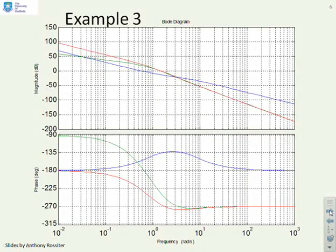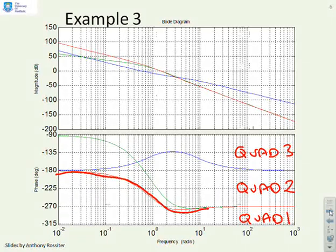Some more examples. Again, we suggest you put the quadrants down before you start, so between minus 90 and minus 180 is quadrant 3, between minus 180 and minus 270 is quadrant 2, and below minus 270 you're moving into quadrant 1. The red plot starts in quadrant 2 and moves into quadrant 1. The green plot starts in quadrant 3, goes through quadrant 2, and ends up in quadrant 1. The blue plot is always in quadrant 3.